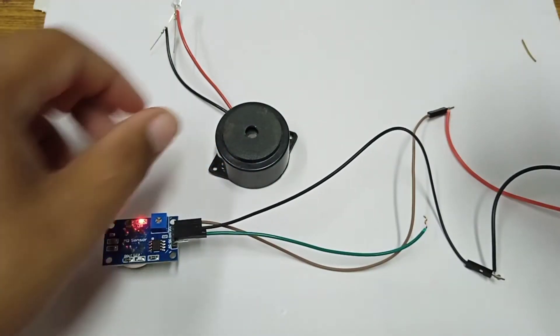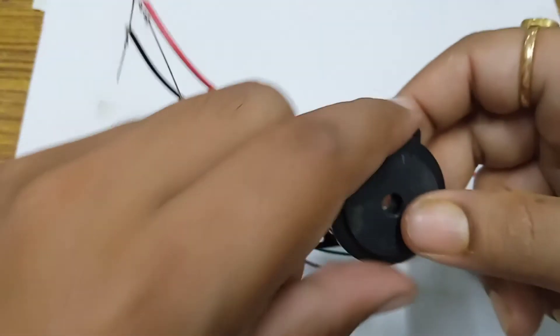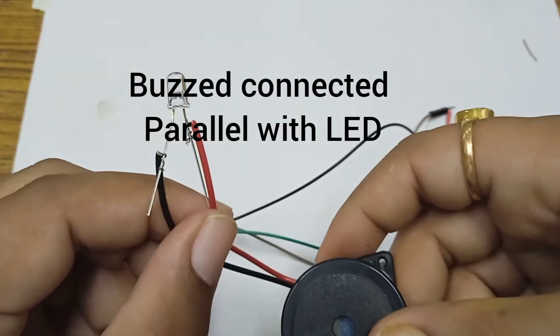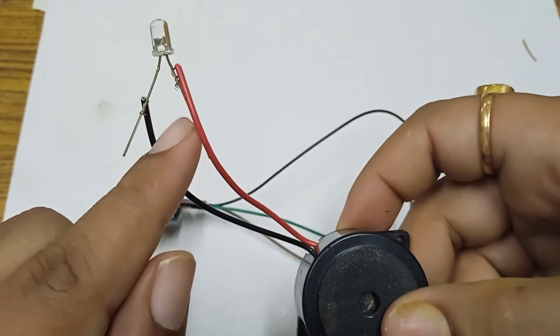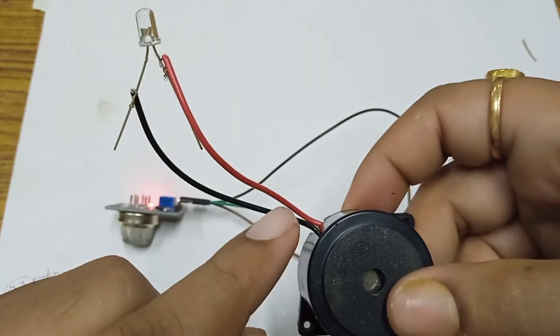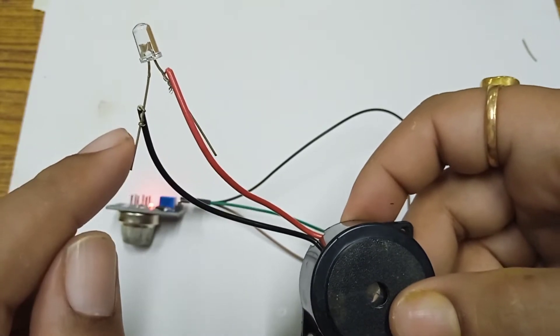Now as a load we'll be using a buzzer connected in parallel with the LED. So the positive terminal of the buzzer is connected to the anode terminal of the LED and negative is connected to the cathode terminal of the LED.